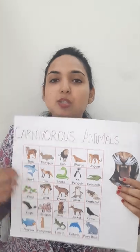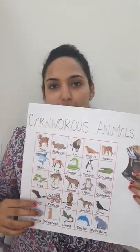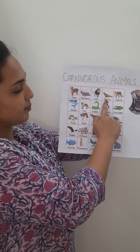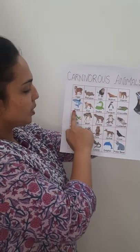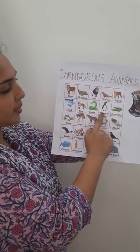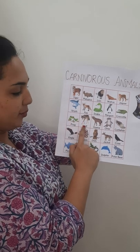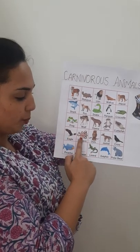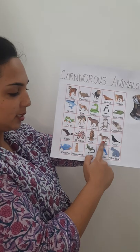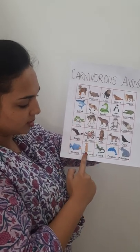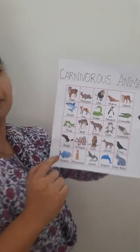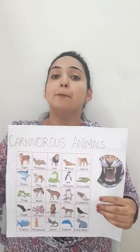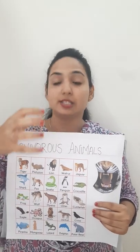I will read aloud all these animals for you — please look carefully: tiger, platypus, lion, walrus, jaguar, shark, fox, snake, penguin, crocodile, frog, wolf, hyena, otter, cuttlefish, eagle, octopus, owls, jackal, crow, piranha, mongoose, lizard, dolphin, and polar bear.